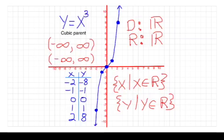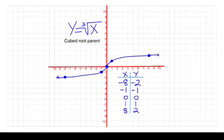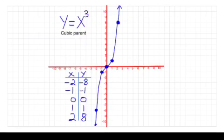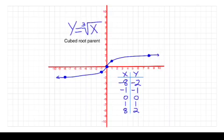Finally, the cube root of x — it looks like an S laid flat on its side. Even though it looks different, the domain includes all x values, so it's all real numbers. The range is also all real numbers. We would write the set notation and interval notation exactly as we did for the cubic function.